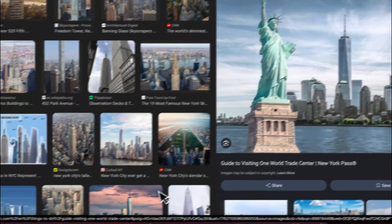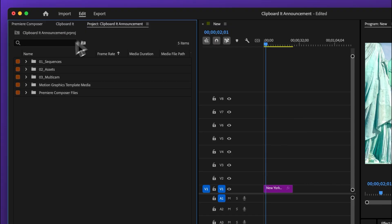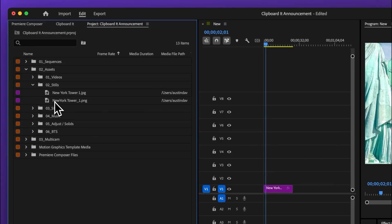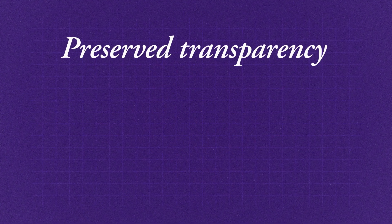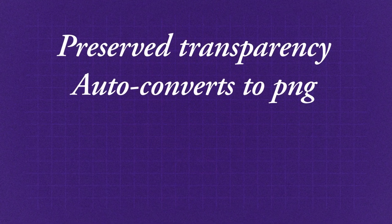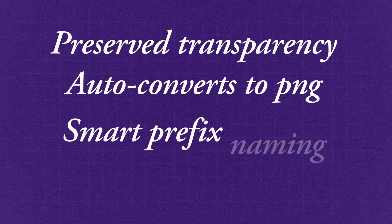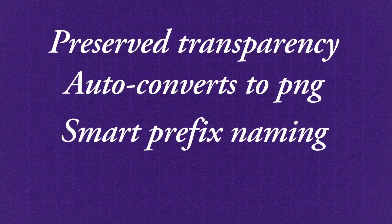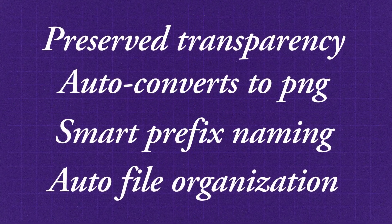Let me show you. I can copy an image from Google, switch to Premiere, and hit paste — and it's just like that. It's in my project bin instantly. Transparency is kept, WebP or AVIF files are auto-converted to PNG, renaming is automatic, and the organization is already sorted into the right folder. No saving, no importing, no wasted time.